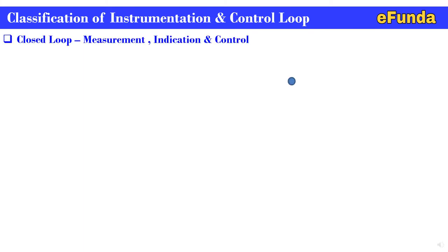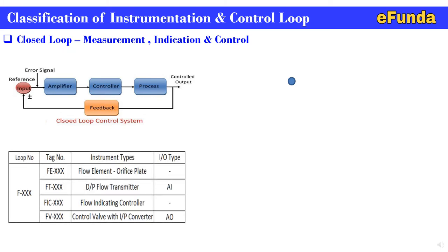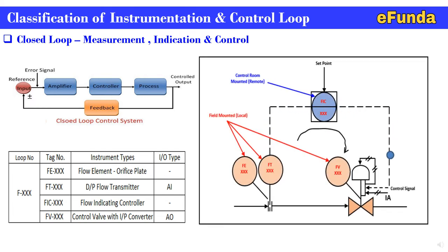Closed loop — measurement, indication and control. One can see the closed loop control system where the input signal is connected to the amplifier, amplifier to the controller, controller to the process, and feedback is taken and connected again with the input so as to compare the feedback and the input. In the table below, the flow loop instruments are shown: FE flow element orifice plate, FT DP flow transmitter analog input to the control room, FIC flow indicating controller, FV control valve with I2P converter having analog output from the control room.